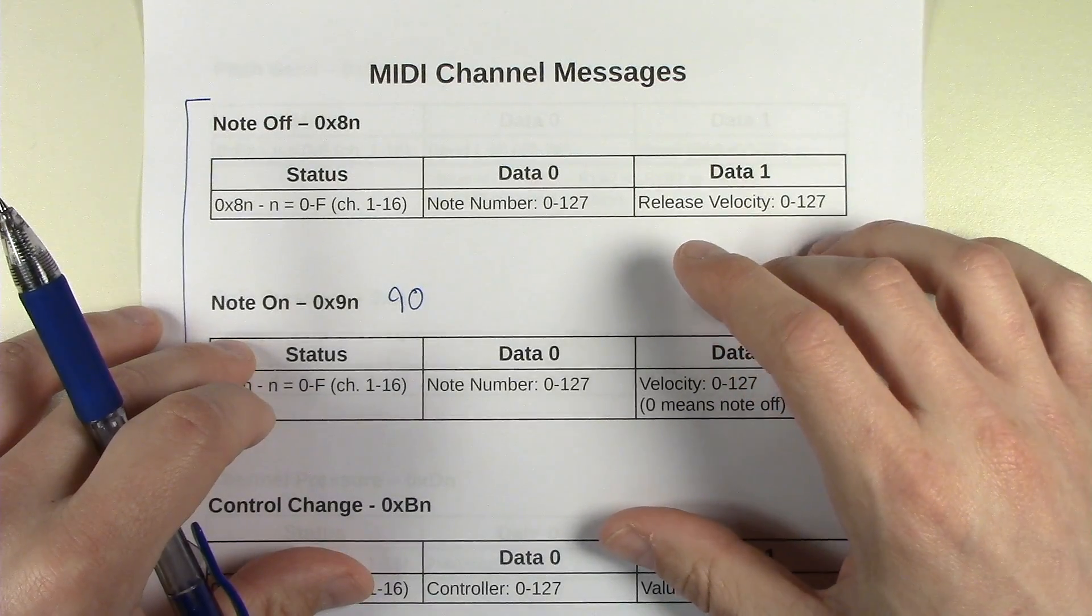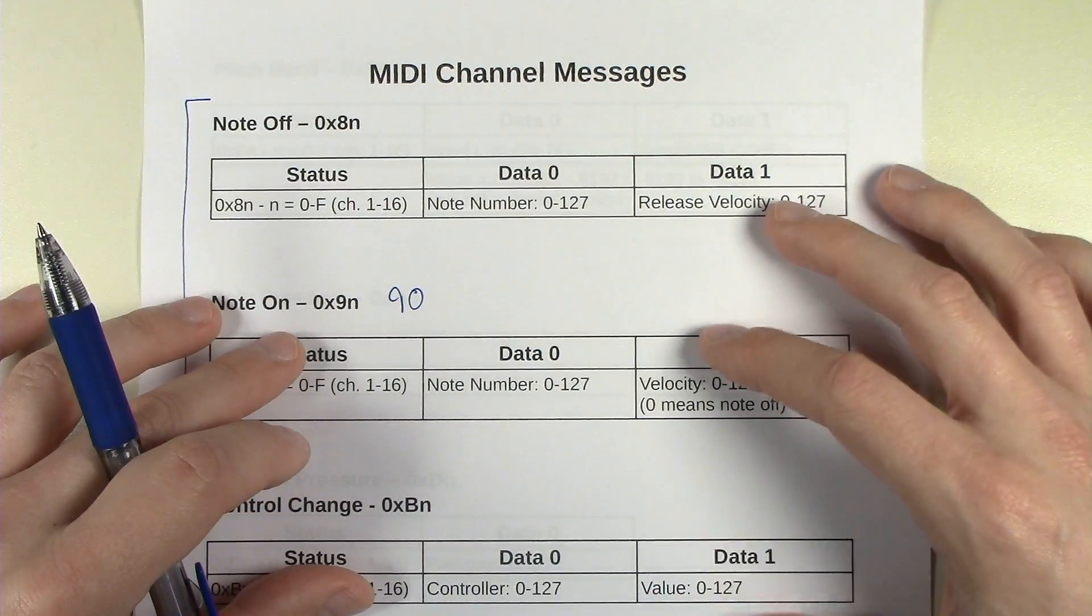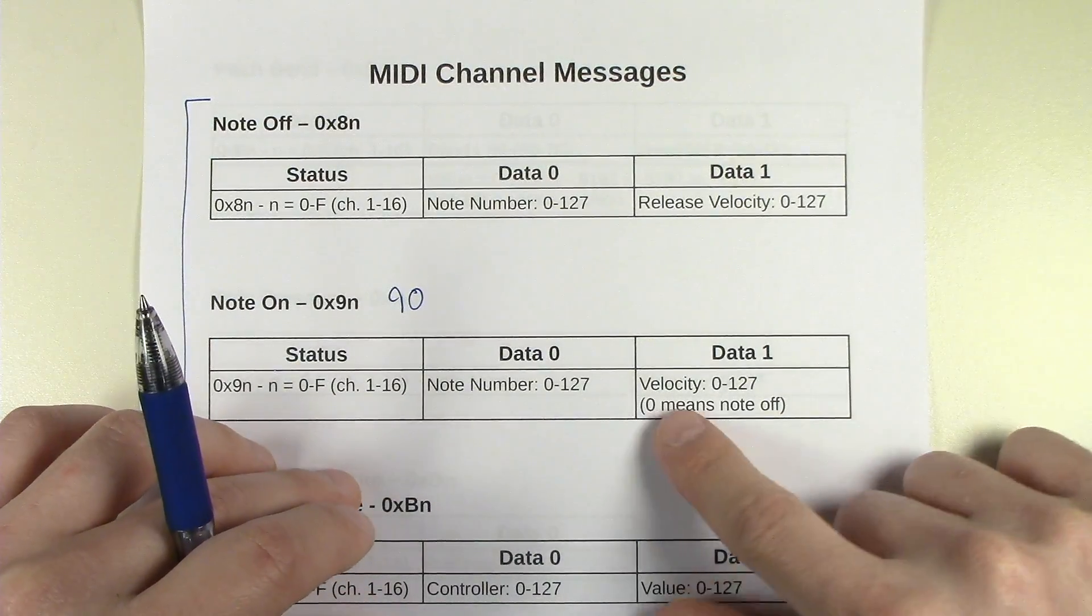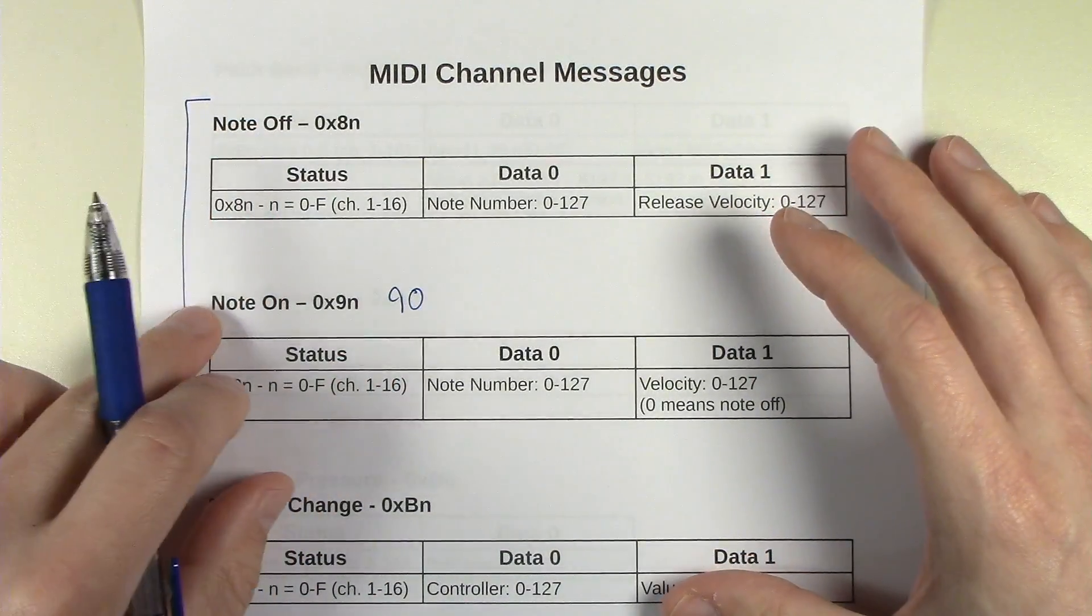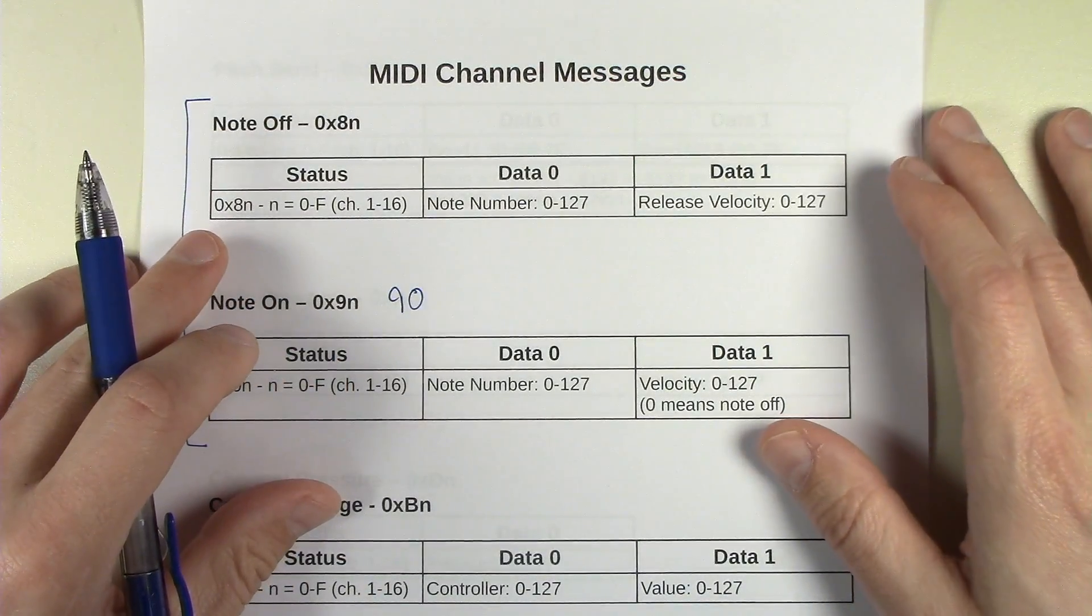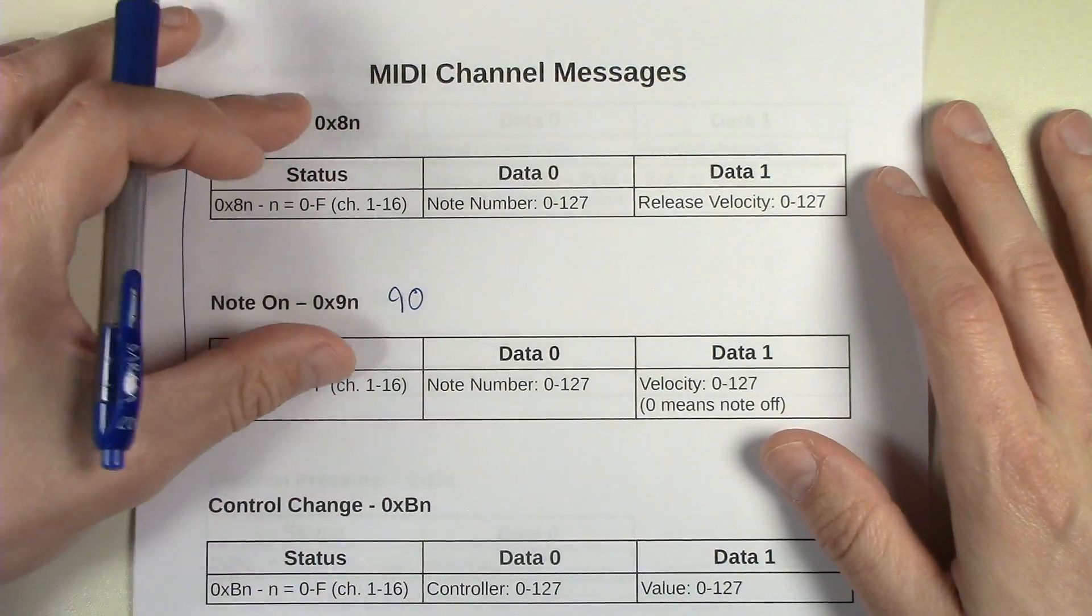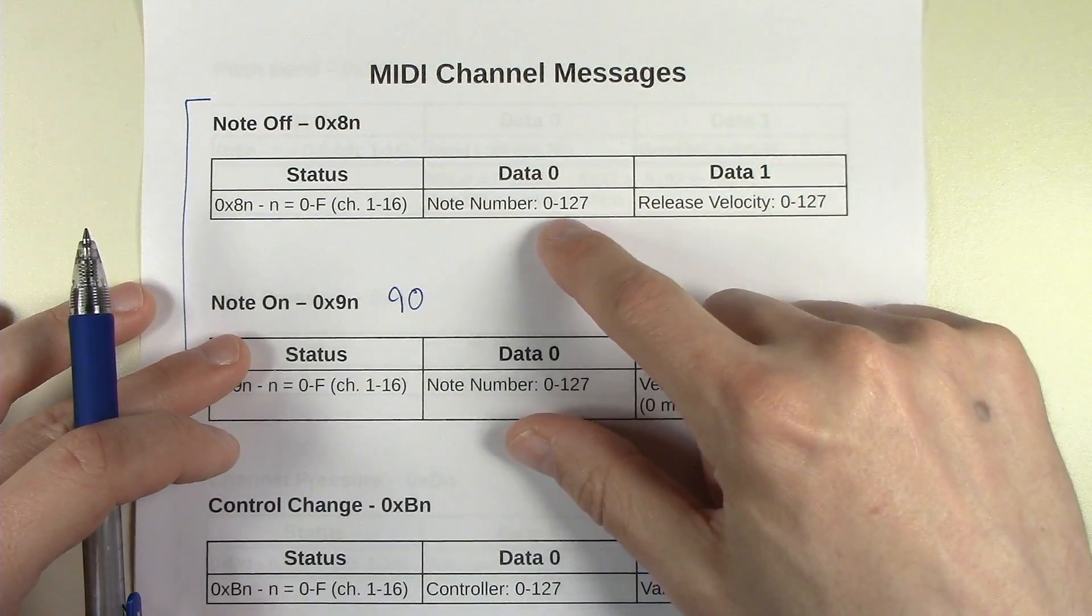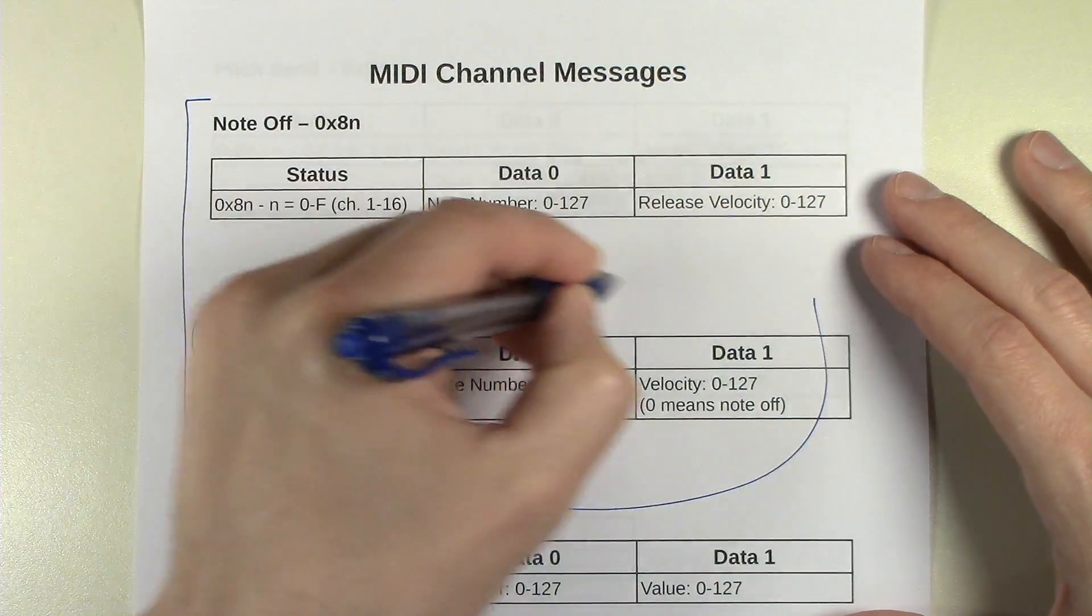Velocity on Note Ons is often used to determine how loud the note will play, but different release velocities are not that commonly implemented as far as I know. So often in software what will happen is if you get a Note On with a velocity of zero, the software library will rewrite that as a Note Off. And that actually is a common thing and it's a good idea. If you're writing software that deals with MIDI, sometimes it's just more convenient to be able to differentiate between Note On and Off just by looking at the status byte and not having to actually look at the velocity.